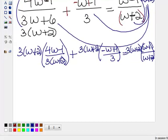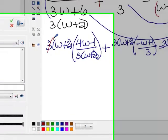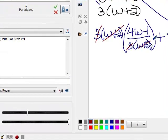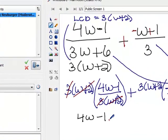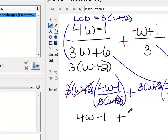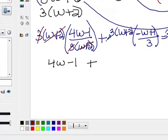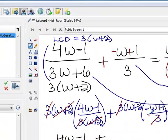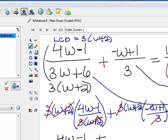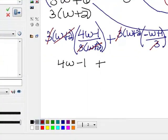Let's go back and cross cancel. I notice the 3's cancel and the w plus 2's here. That leaves me with a 4w minus 1. On the next expression, the 3's cancel, and I'm left with an entire w plus 2 times negative w plus 1. So this needs to foil right here.